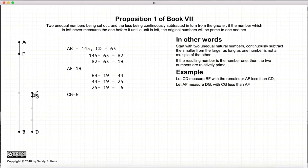So CG is 6. And we're going to subtract it from the larger number, which is AF. So we do it again. 19 minus 6 is 13. 13 minus 6 is 7. 7 minus 6 is 1. And now we've ended up with the number 1. And because we've ended up with the number 1, this proposition is stating that 145 and 63 are prime to one another.